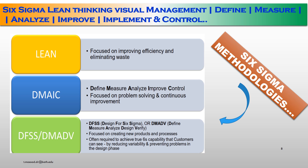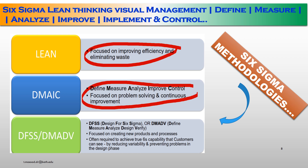Six Sigma methodologies: first, lean — focus on improving and eliminating waste. Second, DMAIC — define, measure, analyze, improve, control — focus on problem solving and continuous improvement. Third, DFSS or DMADV — Design for Six Sigma, define, measure, analyze, design and verify — focus on creating a new product and process, often required to achieve true Six Sigma capability by reducing variability and preventing problems in the design phase.